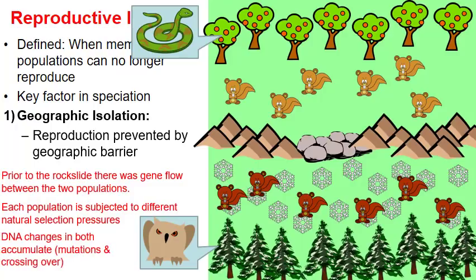Over millions and millions of years, these two squirrel populations would likely diverge and become different species — the squirrels on top having incompatible DNA with the squirrels on the bottom. This is one of the key factors that leads to the evolution of a new species.